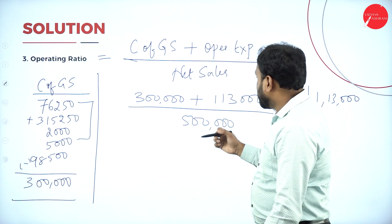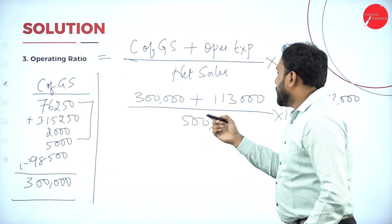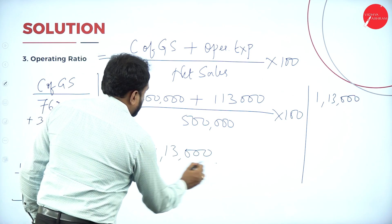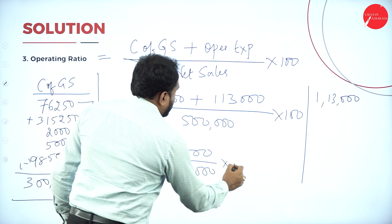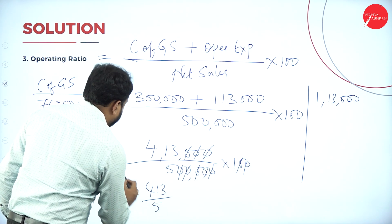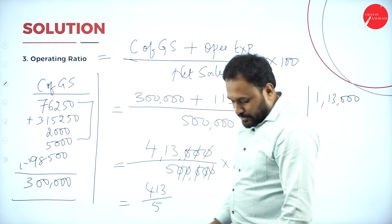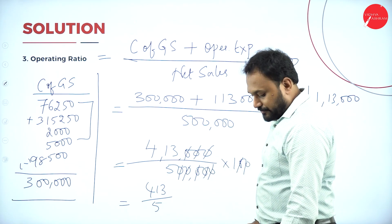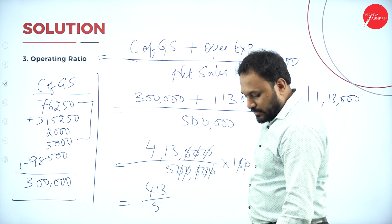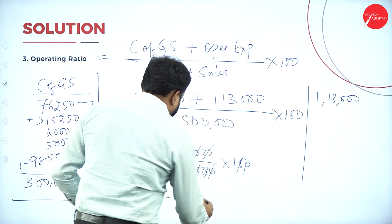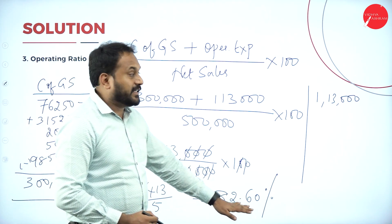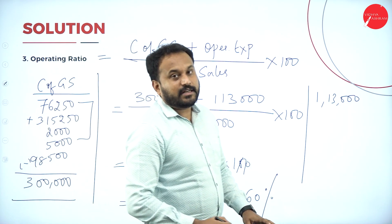So: 3 lakh + 1,13,000 = 4,13,000. Operating Ratio = 4,13,000 divided by 5,00,000, into 100. That gives us 413 divided by 5 = 82.60. So Operating Ratio is equal to 82.60%. Everything is represented as a percentage.